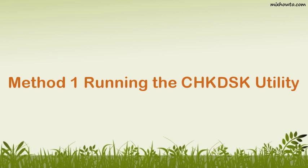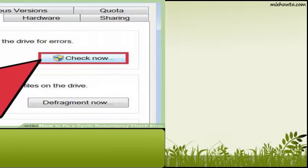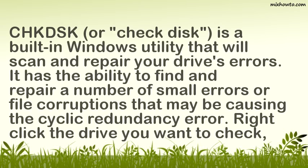Method 1: Running the CHKDSK Utility. Step 1 — Access the CHKDSK Utility. CHKDSK, or Check Disk, is a built-in Windows utility that will scan and repair your drive's errors. It has the ability to find and repair a number of small errors or file corruptions that may be causing the Cyclic Redundancy Error.